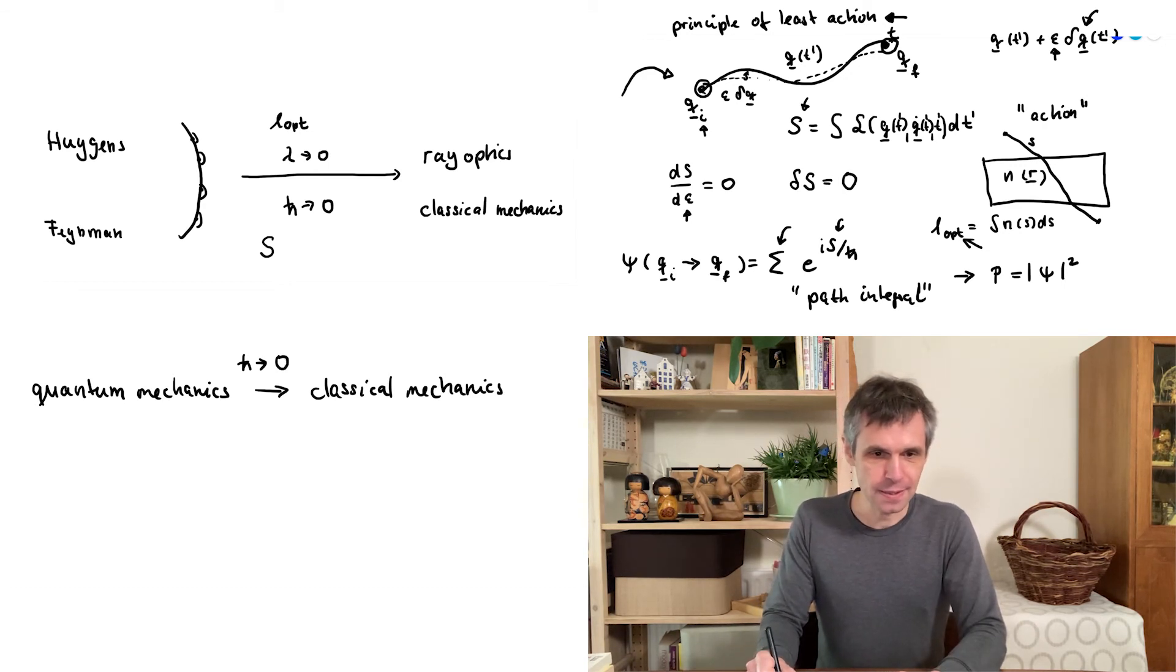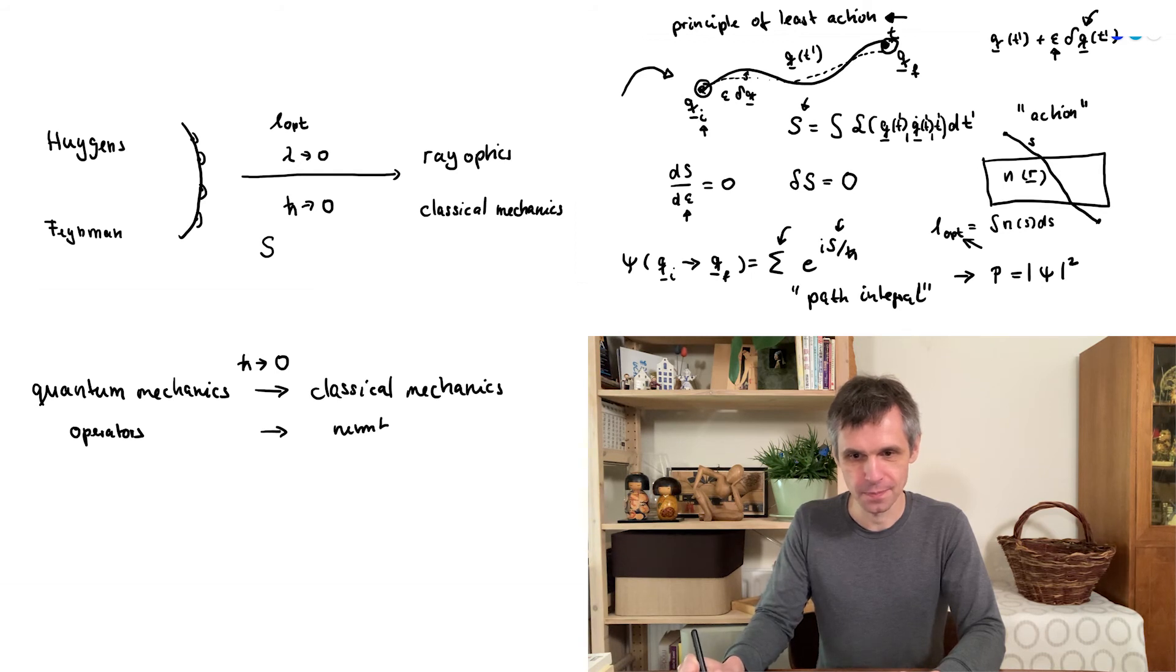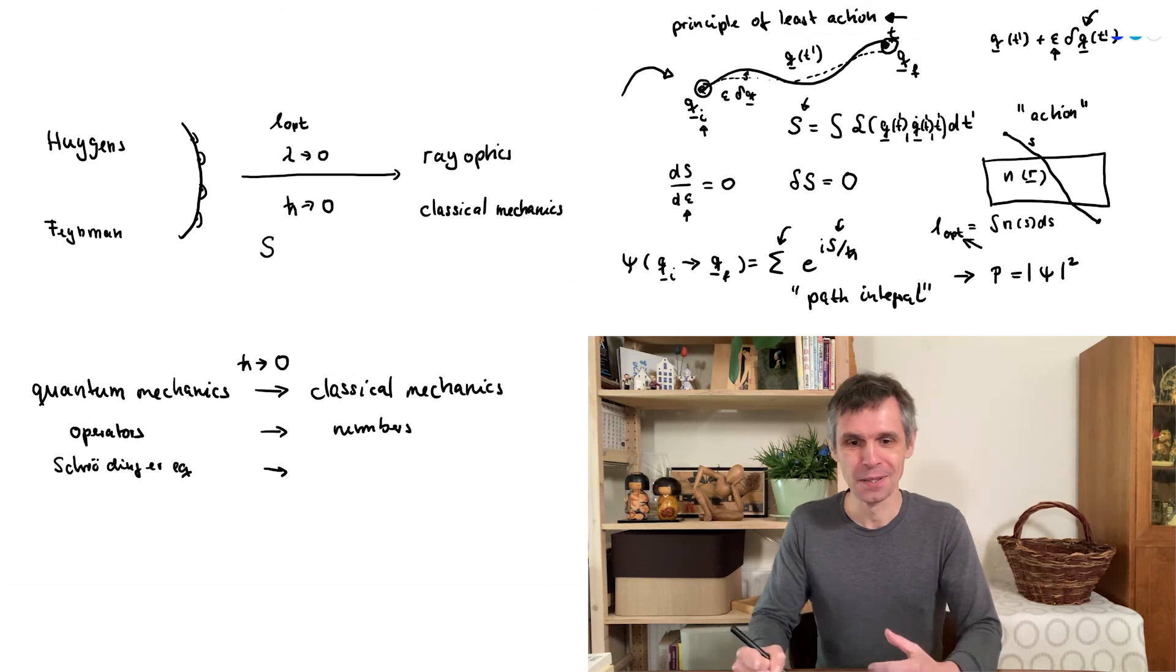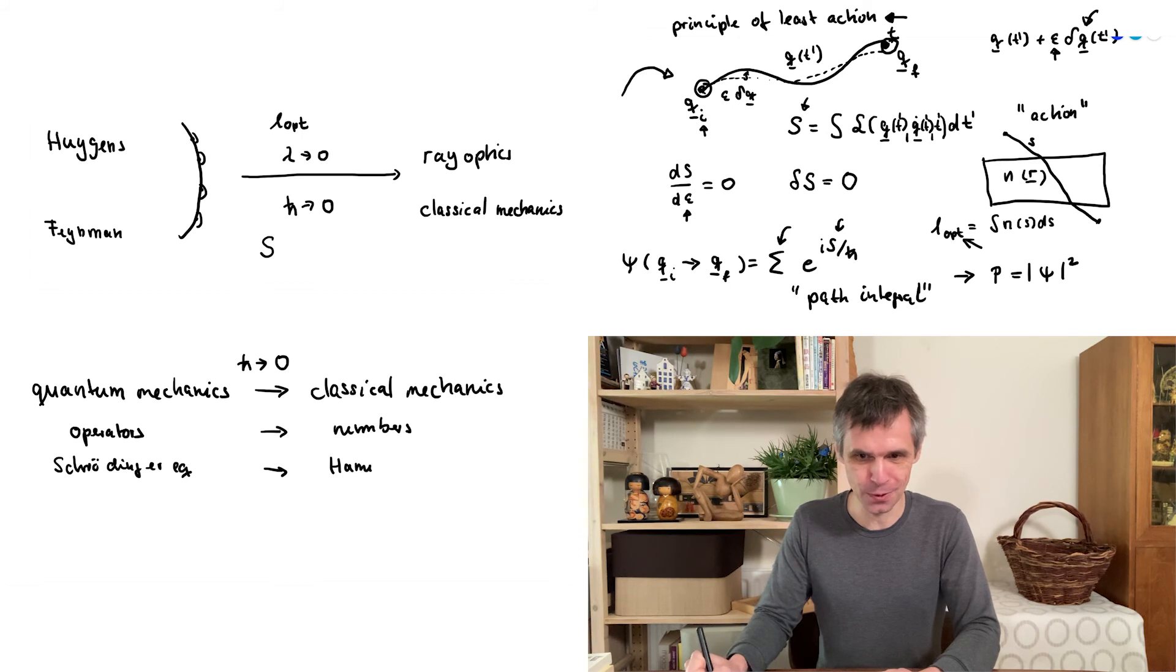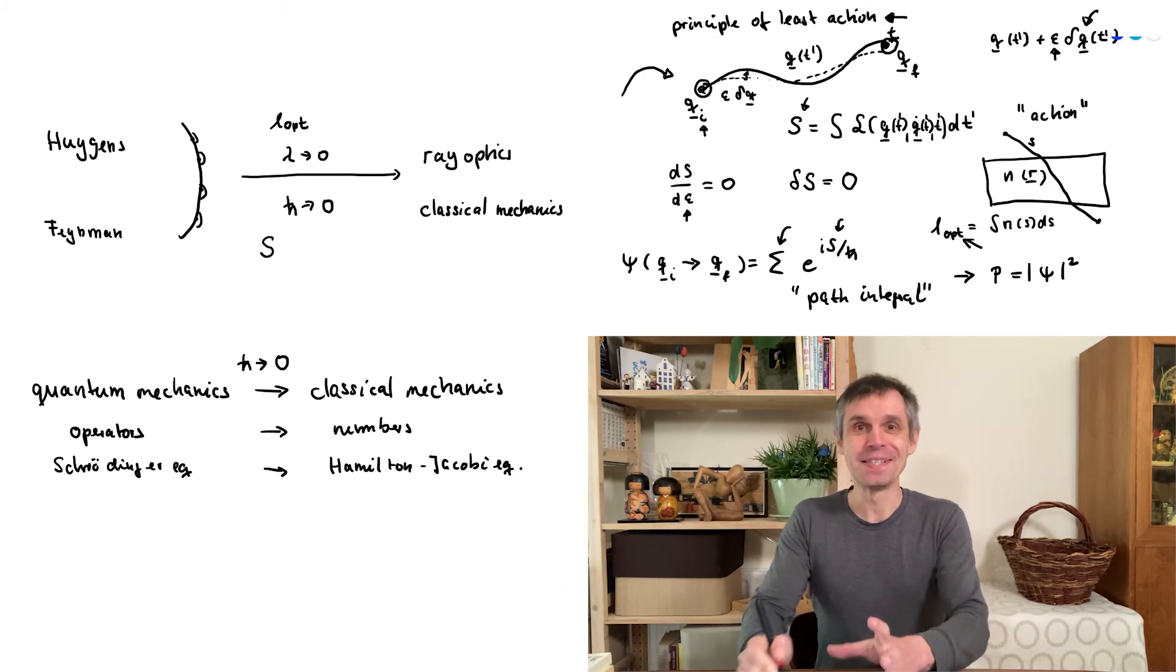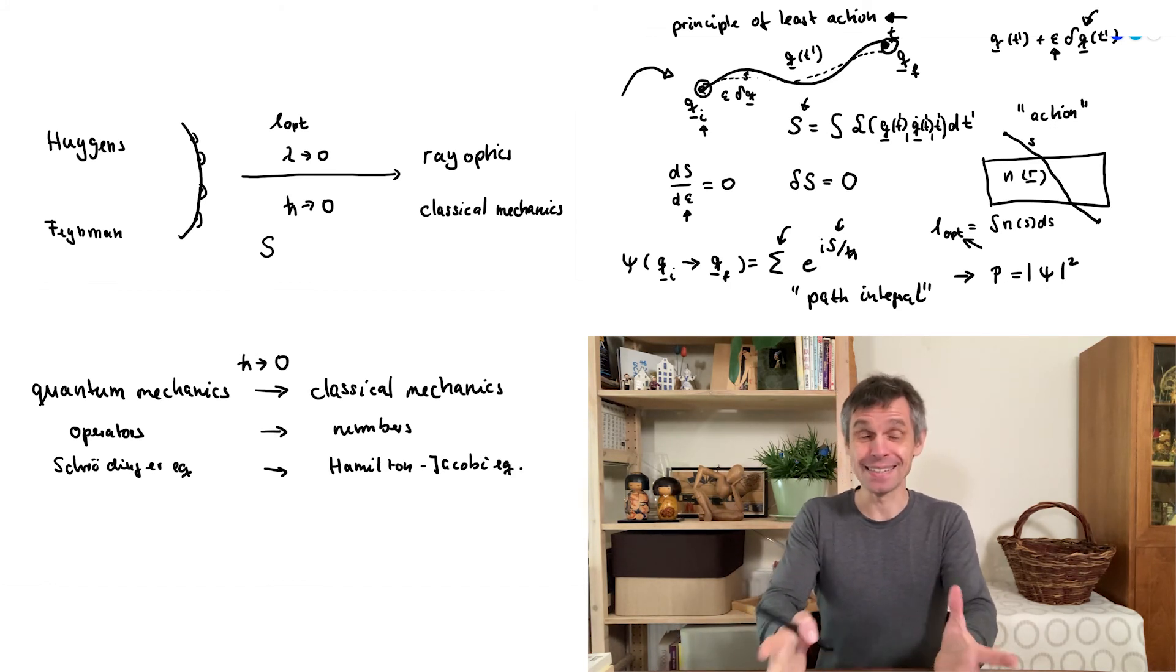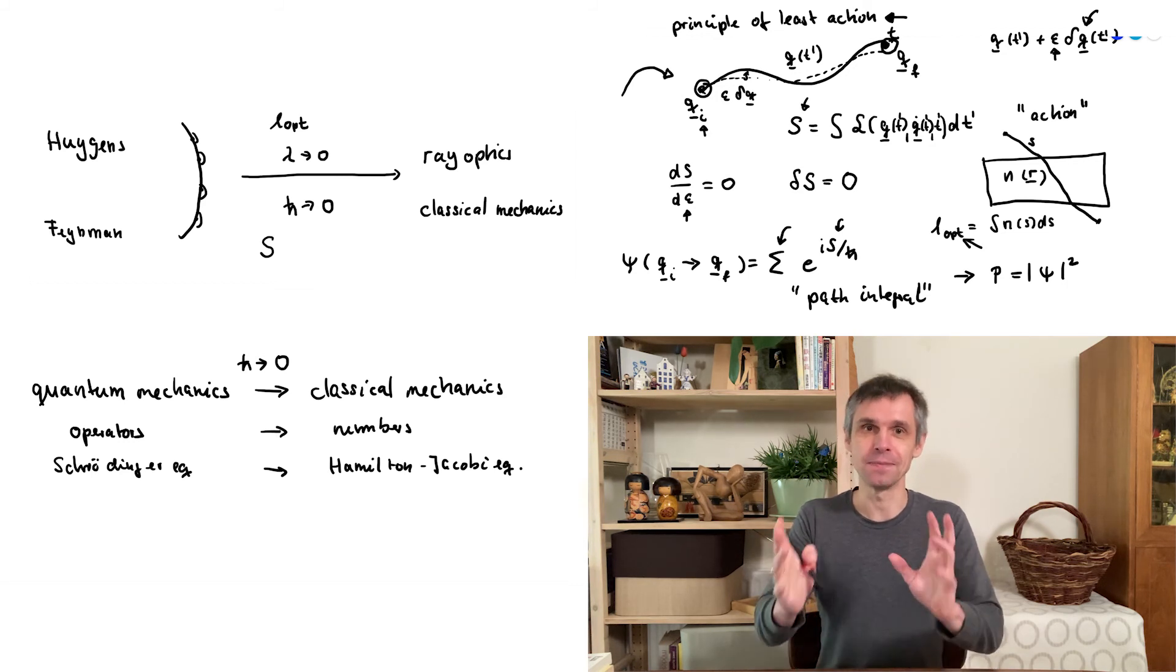Now in this limit essentially the operators which we talked about become numbers. And the Schrödinger equation reduces to a very complicated version of classical mechanics namely the Hamilton-Jacobi equations. So we have this Hamiltonian but this is as complicated as it gets in this analogy. There are many other analogies which are much simpler.